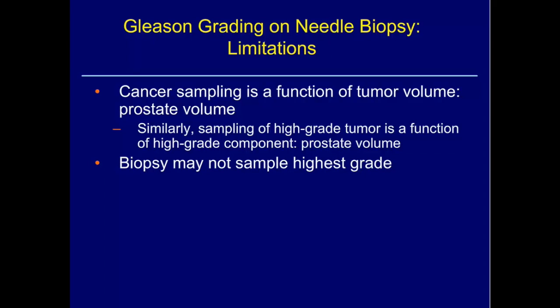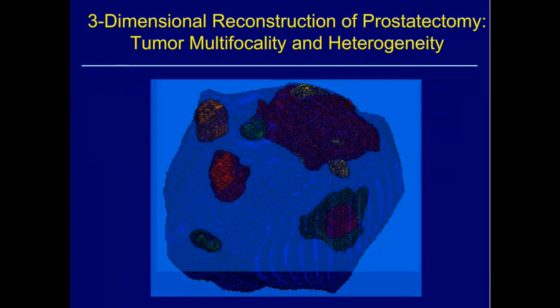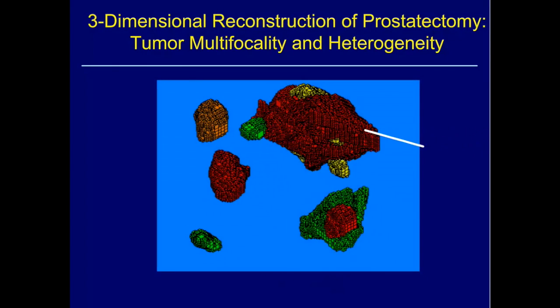This doesn't take away the limitations of needle biopsy. Cancer sampling on a needle biopsy is a function of tumor volume to prostate volume — the bigger the relative tumor volume, the more likely you are to hit it with a needle. Similarly, sampling of the high-grade component is a function of its volume relative to prostate volume. So a very small focus of poor cancer can be missed, and the biopsy may not sample the highest grade.